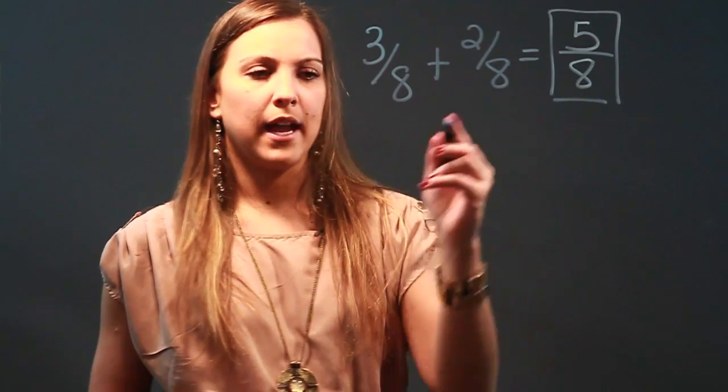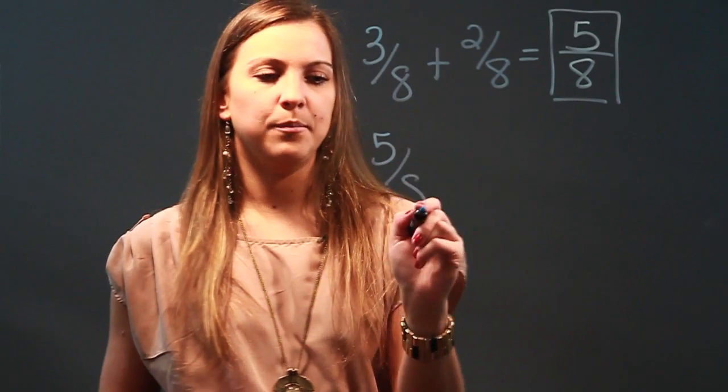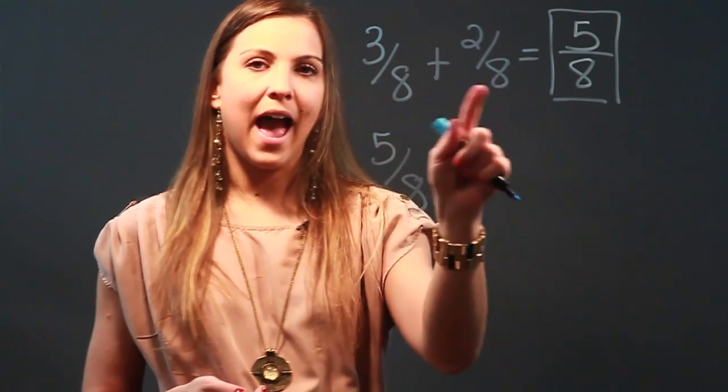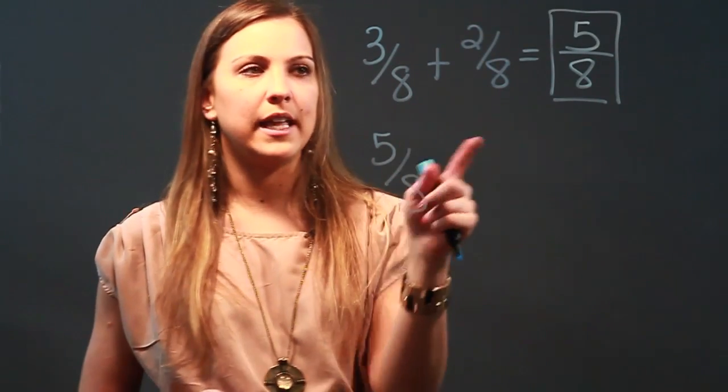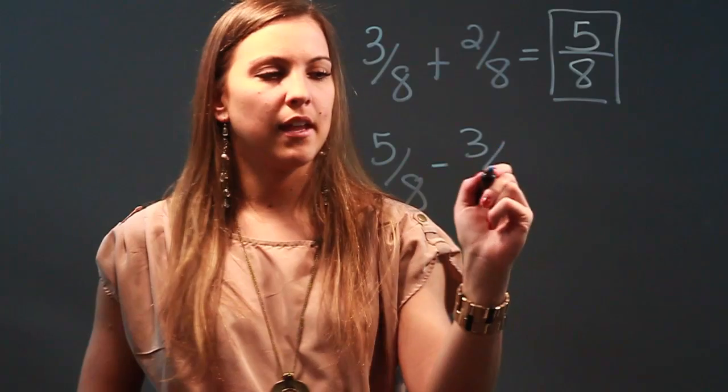So if I start with my answer, 5 over 8, and I subtract one of these addends, I should get the other one. So I'll start by subtracting 3 eighths—it doesn't matter which one you pick. Minus 3 eighths.